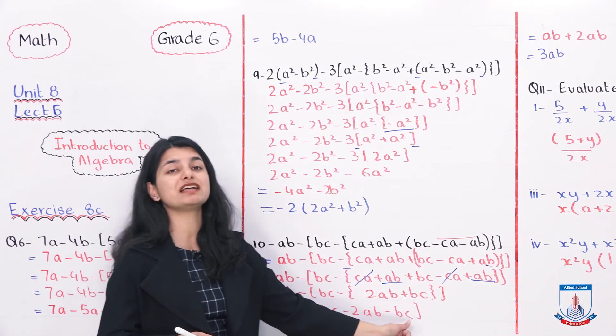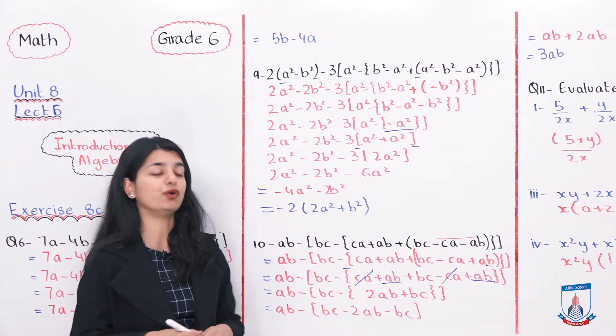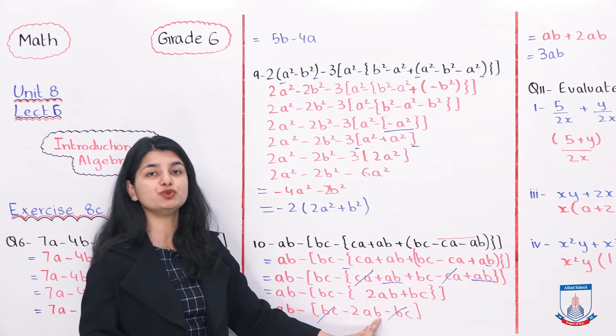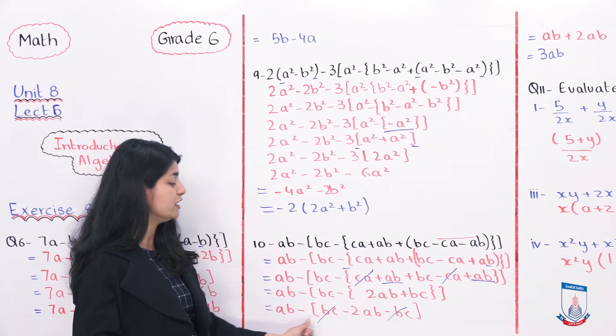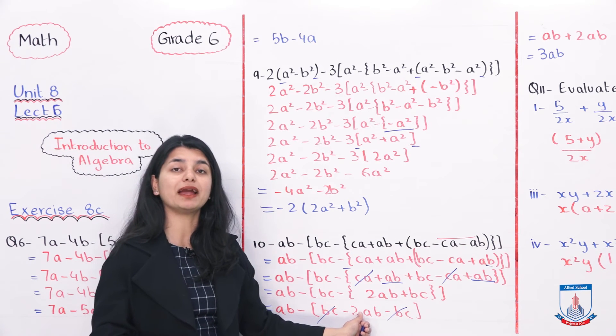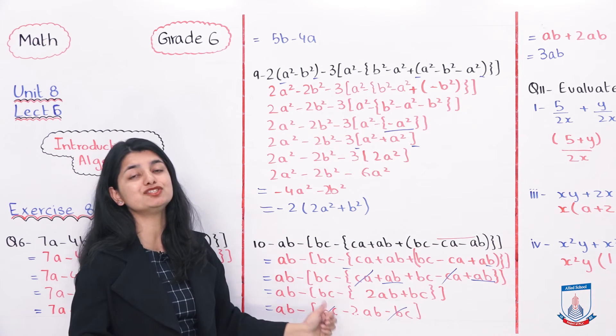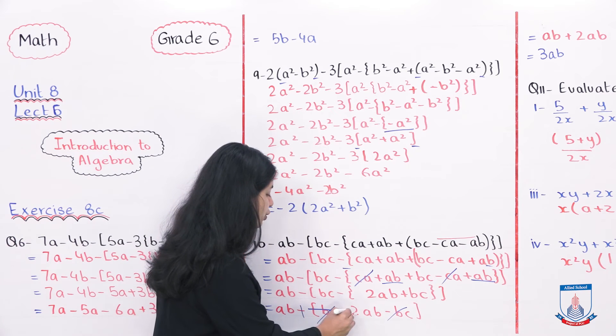Again, jo se terms aapas mein relate kari hai, jaise ke BC minus BC is what? Is zero. So, these two cancel out. We only have minus 2AB left, and outside the minus sign. So, if there is minus 2AB and under minus 2AB, we have to multiply the minus from the outside, then it will become plus 2AB. So, this way you have plus 2AB left.